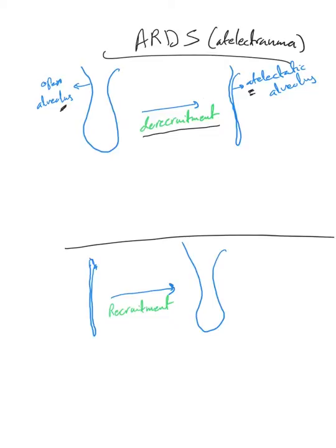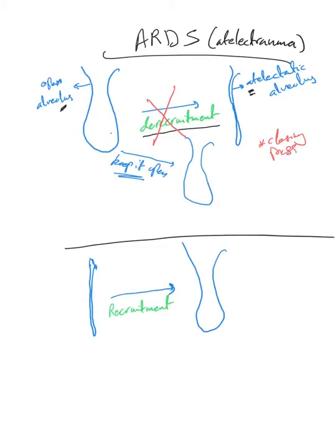Our main goal in ARDS is to prevent de-recruitment — to keep the alveolus open. To achieve this, we need to provide what we call closing pressure, which is the pressure needed to keep an already-open alveolus open at the end of expiration. We provide this pressure in the form of positive end-expiratory pressure, or PEEP.